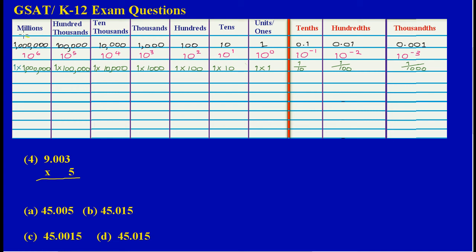In this lesson we're asked to evaluate or find the value of 9.003 multiplied by 5. This X means multiplication, so we're multiplying 9.003 by 5. This is a multiple choice past paper question and they gave us some options for us to choose the best out of four options for our answer.